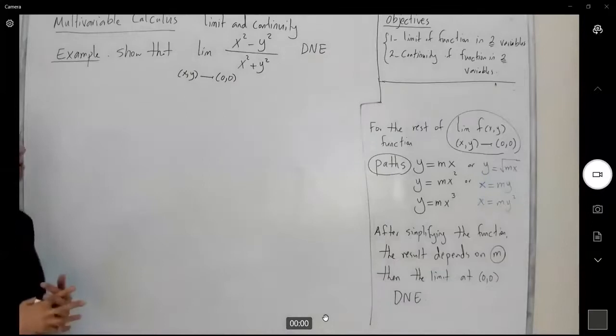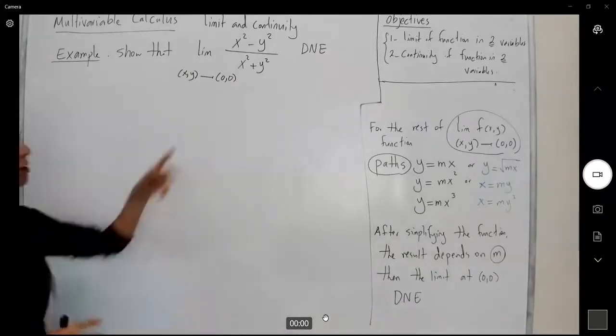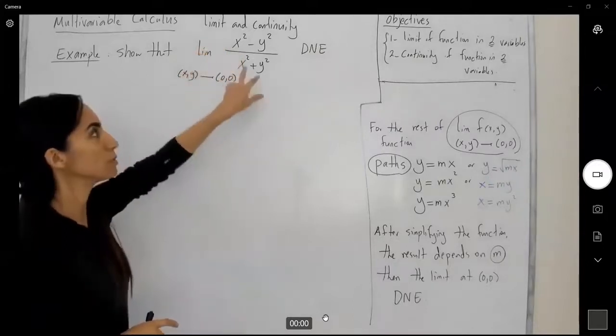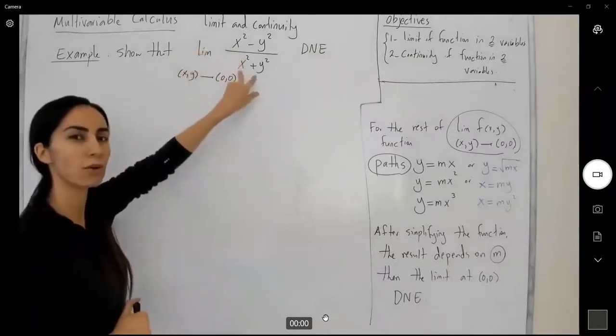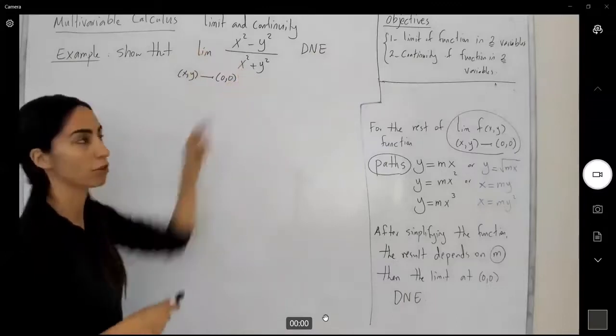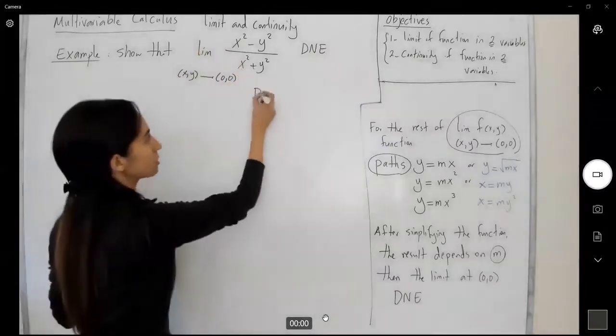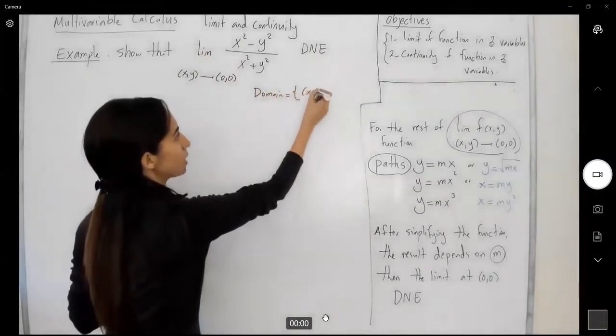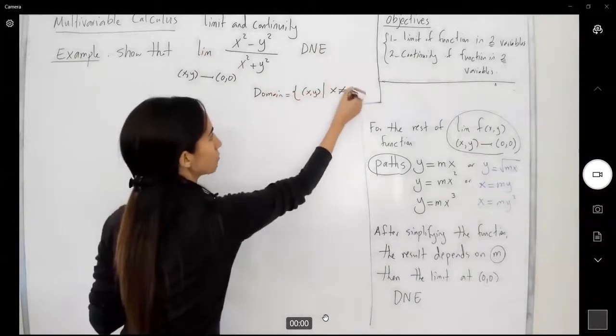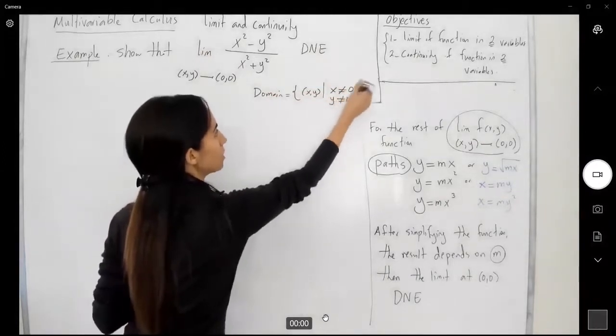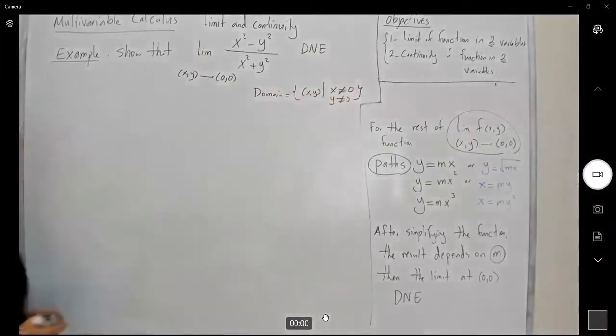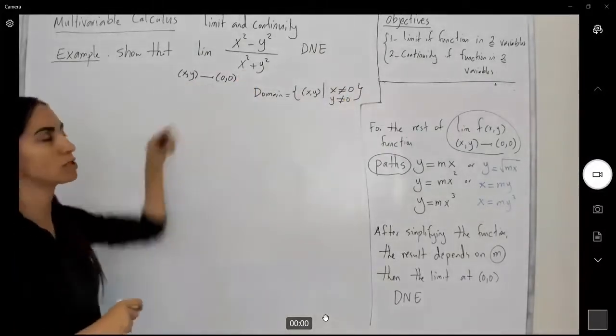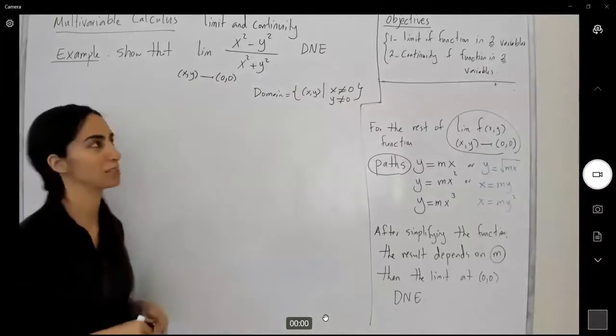First of all, remember the domain of this function. Since it's a rational function, it means that we have to exclude (0,0) from the domain of the function. So recall that the domain is the set of all points (x,y) such that x and y, none of them are equal to zero. Your denominator cannot be zero, but you're getting closer and closer to (0,0).